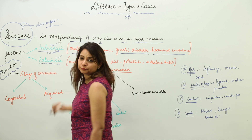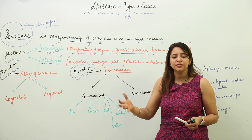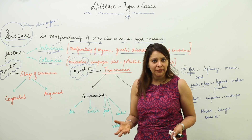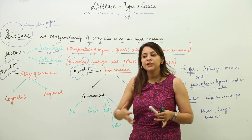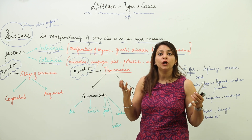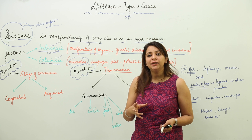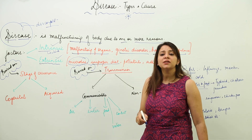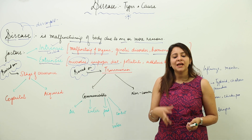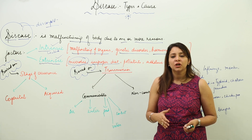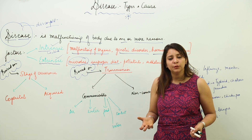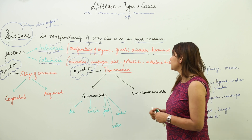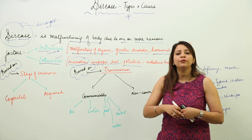We can also have an extrinsic factor — an external factor not within the body. This can include microbes such as bacteria, viruses, fungi, and protozoans, which surround us everywhere and can lead to disease. Improper diet is another extrinsic factor — not taking a balanced diet or having a nutritional or mineral deficiency in the body.